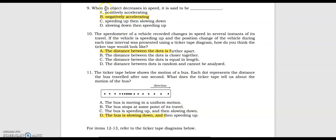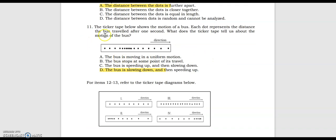Number 9, when an object decreases in speed, it is said to be negatively accelerating. Number 10, the speedometer of a vehicle recorded changes in speed in several instances of its travel. If the vehicle is speeding up and the position change was presented using a ticker tape diagram, how would the ticker tape look? The answer is the distance between the dots is farther apart.